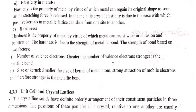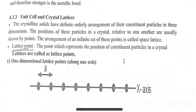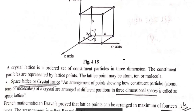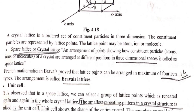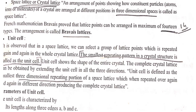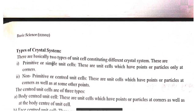Some properties in metals include elasticity. An important concept is the unit cell. A lattice point represents the position of a constituent particle in a crystal. Crystal lattice is defined as an arrangement of points showing how constituent particles — atoms, ions, or molecules — of a crystal are arranged at different positions in three-dimensional space. There are 14 types of Bravais lattices. A unit cell is the smallest repeating pattern in a crystal structure. Parameters of a unit cell are the edge lengths a, b, c and angles alpha, beta, gamma.